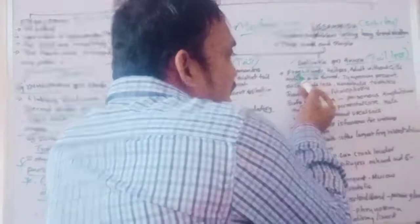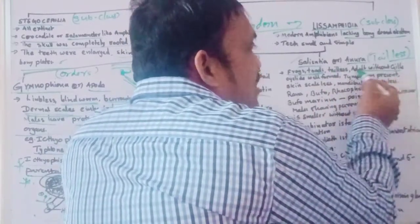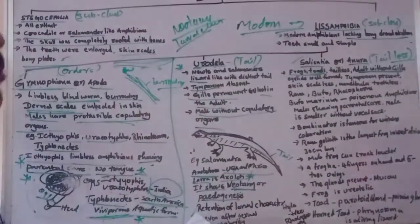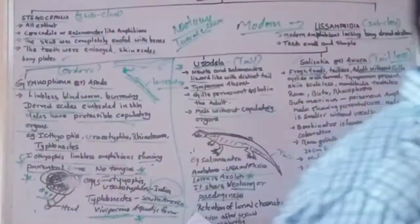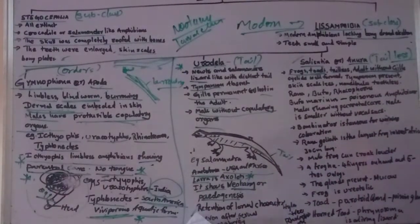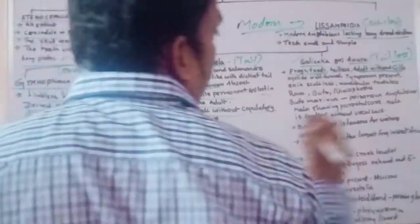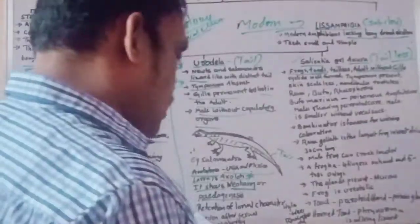In Urodela, gills are present even in adults for most species. But in adult frogs, gills are absent. In the frog's larval stage — the tadpole larva — it respires with gills. When it becomes an adult, it respires with skin, buccal-pharyngeal respiration, and lungs.